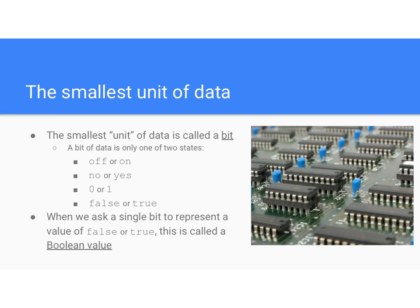The first thing you need to know is that our smallest unit of data is called a bit. Your computer has a bunch of little transistors built into it — basically little light switches that can be switched off or on. If a light switch is switched to off, we can interpret that as the number zero. If one of the light switches is switched to on, we can interpret that as one.